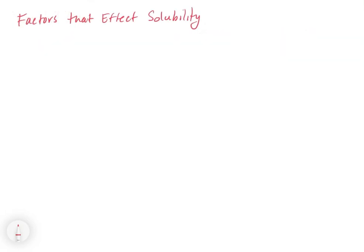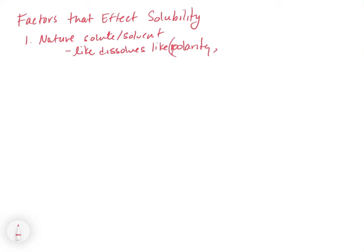In terms of factors that affect solubility, there are some common things. First is the nature of the solute and solvent — this is what we call like dissolves like. What we're talking about here is polarity: polar things dissolve other polar things, and nonpolar things tend to dissolve nonpolar things. Solute-solvent interactions can range from hydrogen bonding to polar bonds to London dispersion forces.